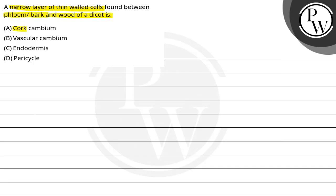Options are: cork cambium, vascular cambium, endodermis, and pericycle. So the key concept here is the layer present between phloem or bark and wood of a dicot.